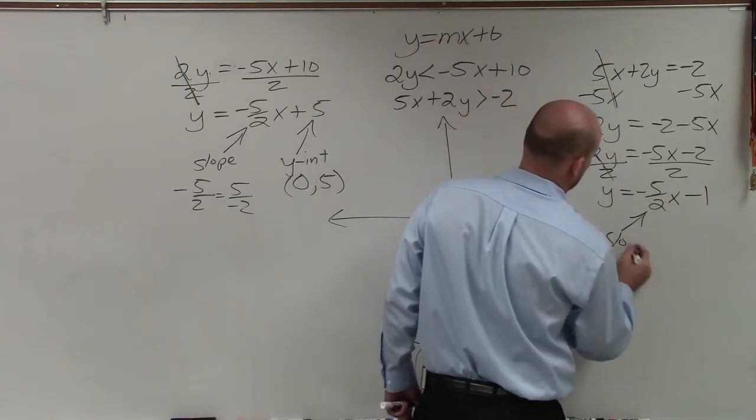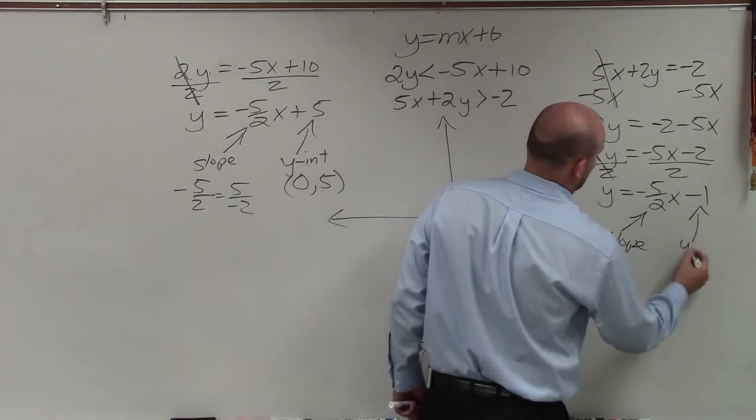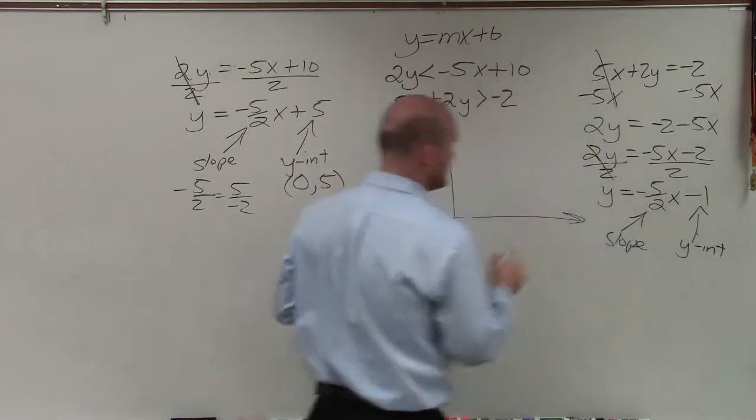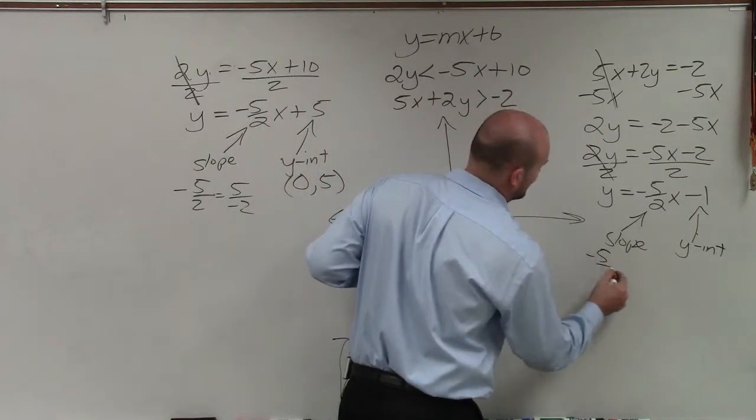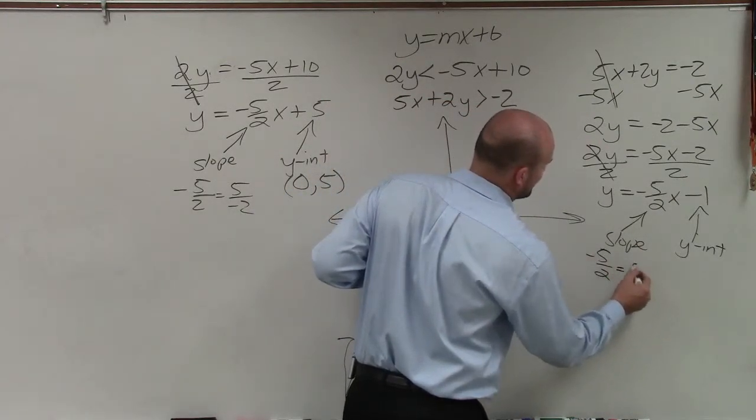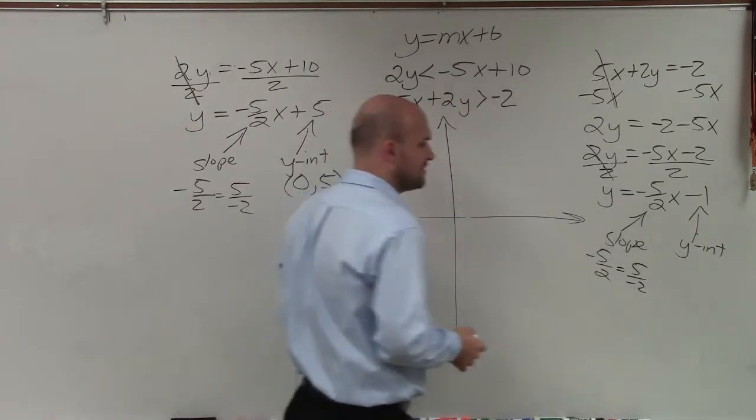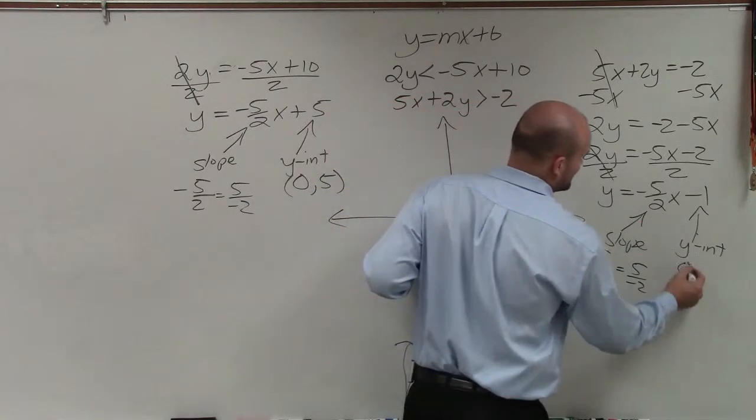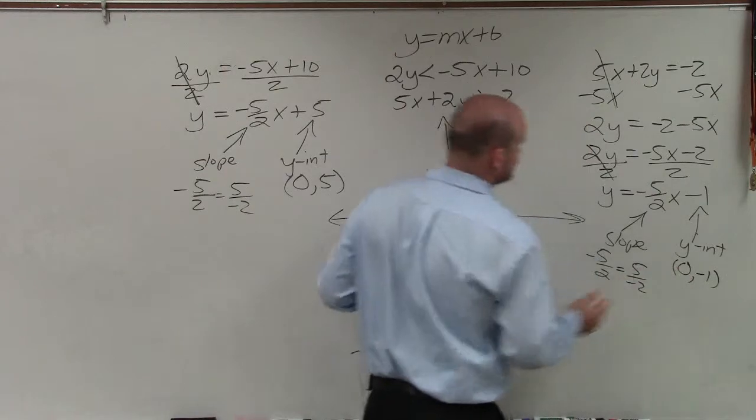So now I have a new slope for this one and a y-intercept. And just like my last equation, my slope can be a negative 5 halves or a negative 5 divided by 2 or 5 divided by negative 2. And then my y-intercept is 0 comma negative 1. All right.